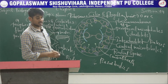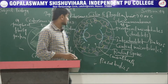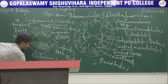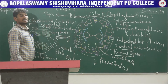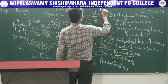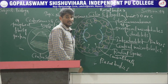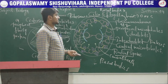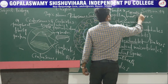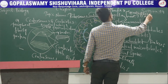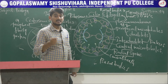The functions of centrosomes and centrioles: they help in the formation of basal bodies in both cilia and flagella. They also help in the formation of spindle fibers. These spindle fibers help in the attachment of chromosomes during cell division.